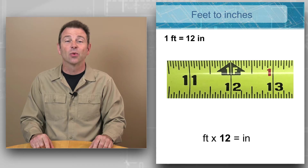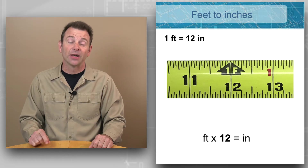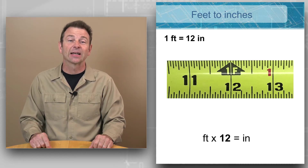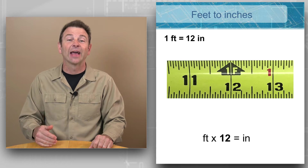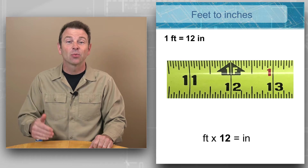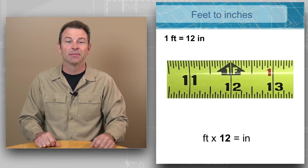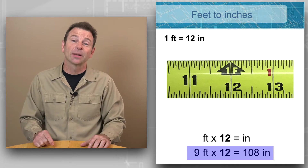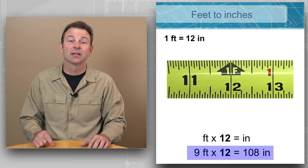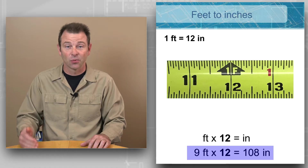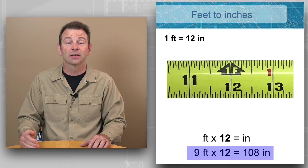If I wanted to go the other way we could do that as well. If I knew my feet I could multiply that times 12 and arrive at an equal inch measurement. So we have nine feet — we can multiply nine feet times 12 and that's going to give us 108 inches. This is the equivalent unit conversion for inches.